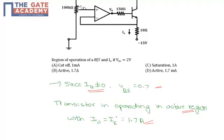In the first part of the question we found the IE value to be 1.7m, so I0 will be equivalent to IE, so it leads to 1.7 amps. So option B is the correct one. It is active region with I0 value as 1.7 amps.